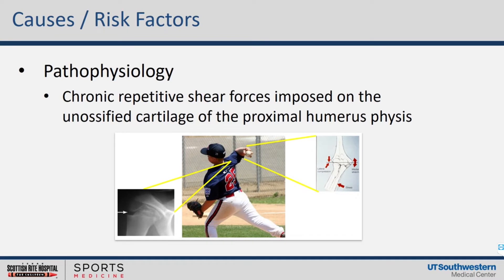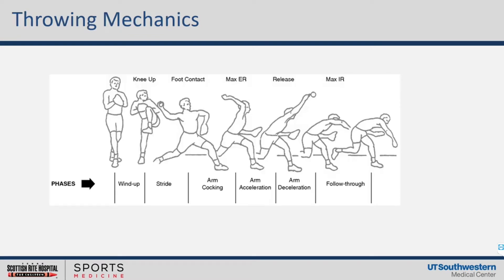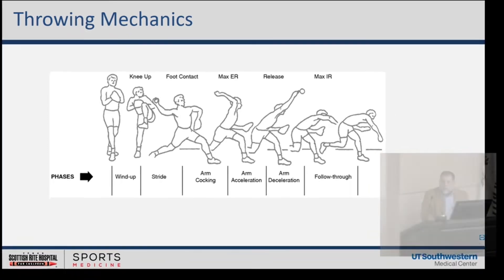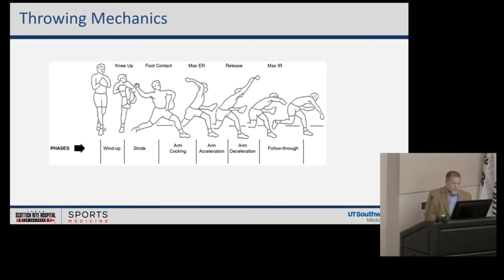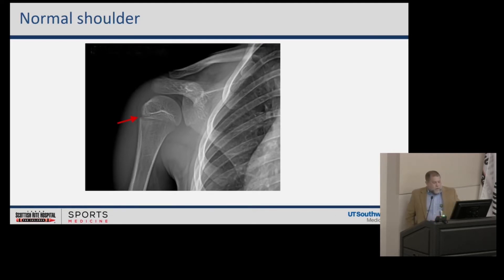The pathophysiology involves repetitive shear forces imposed on the unossified cartilage of the proximal humeral physis. When we think about the pitch sequence and mechanics, there's a tremendous amount of force placed across the shoulder as the arm goes into massive external rotation accelerating backwards, and then as we slow down coming through, there are massive rotational forces imposed on that growth plate.